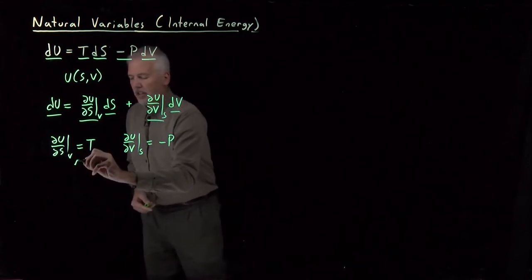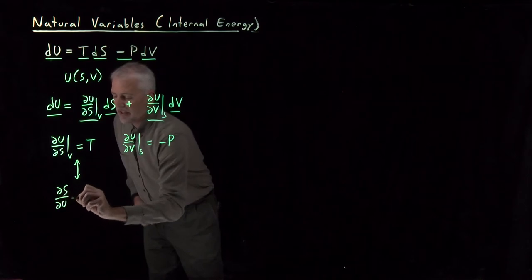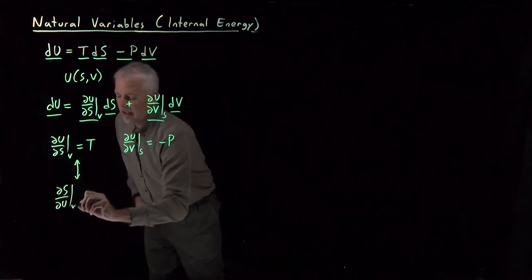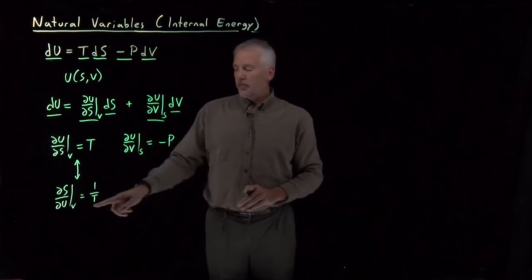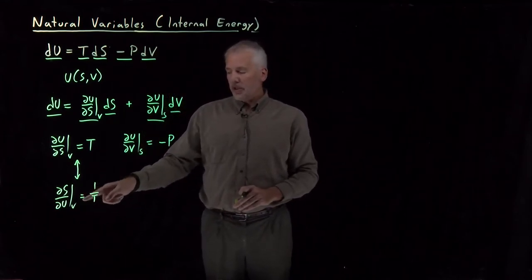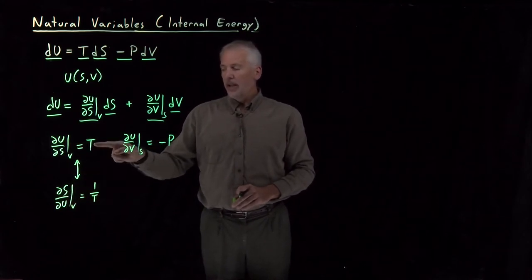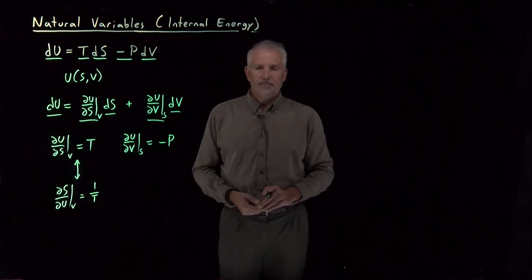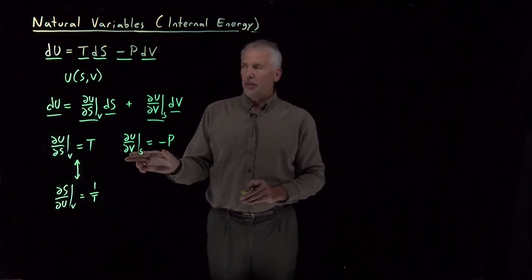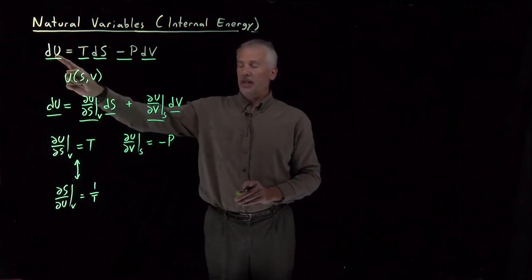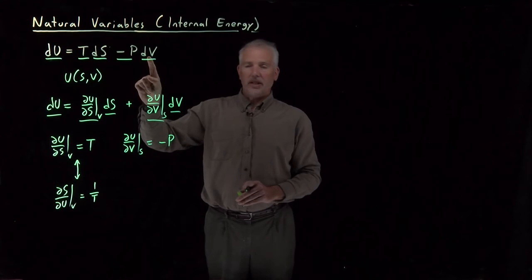This result is not completely new — we've previously seen that the change in entropy as I change the energy at constant volume is 1/T, which is just the reciprocal: if I take (∂u/∂S) and turn it upside down, I get (∂S/∂u), giving 1/T instead of T. The pressure result, however, is new. That's one thing the fundamental equation is useful for — telling us how the energy changes as I change S or V.